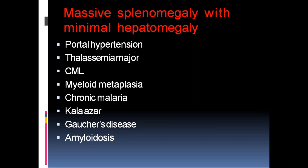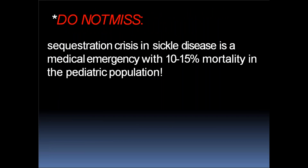Massive splenomegaly with minimal hepatomegaly — important causes to remember: portal hypertension, thalassemia major, chronic myelogenous leukemia (CML), myeloid metaplasia, chronic malaria, Kala azar (visceral leishmaniasis), Gaucher's disease, storage disorders, and amyloidosis. Do not miss sequestration crisis in sickle cell disease — it is a medical emergency because blood pools within the spleen and can lead to mortality due to hypotensive shock.